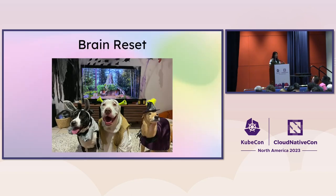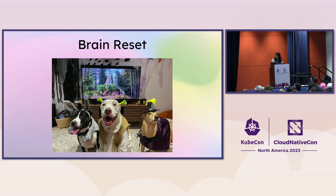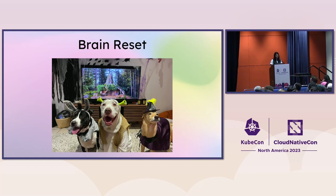Okay, that was a lot of acronyms and values. I just want to take some time to reset our brains. This is a picture of my dog — she's the donkey on the left, with her two best friends dressed up for Halloween. My partner and I like to joke that if they were the three pillars of observability, Misha would definitely be metrics, because she's kind of weirdly shaped and odd.